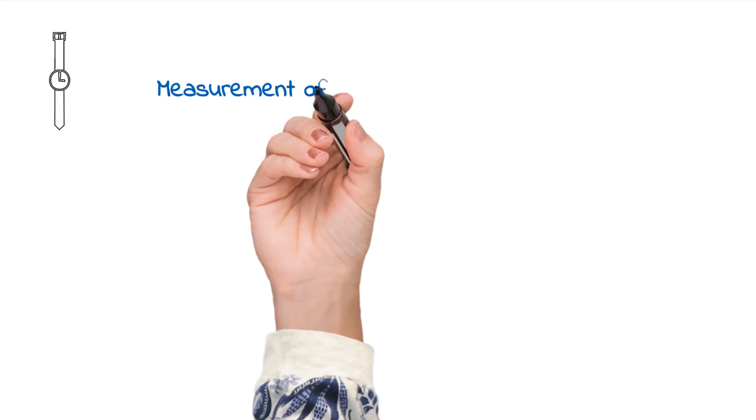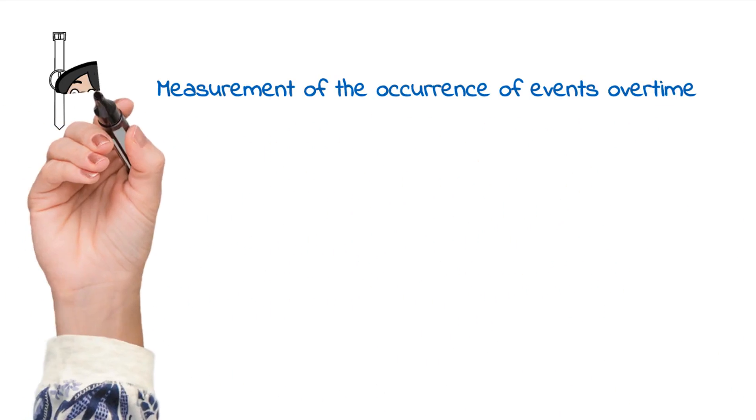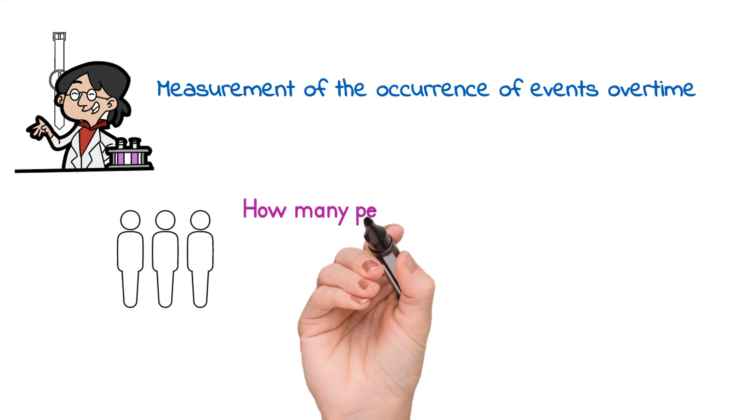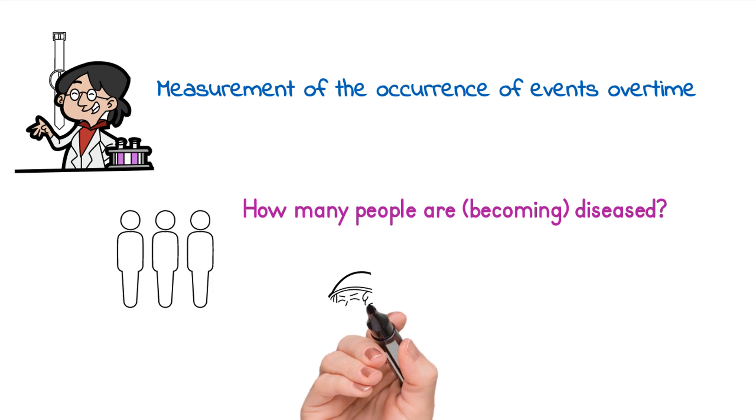Measurement of the occurrence of events over time is a fundamental objective of epidemiological research. How many people are becoming diseased? Why are some diseased - etiology and causal effects?